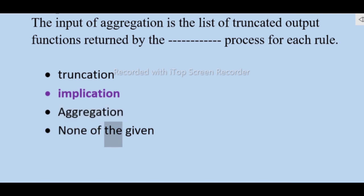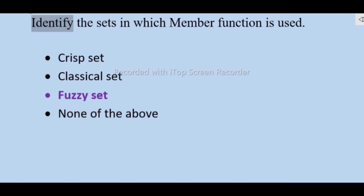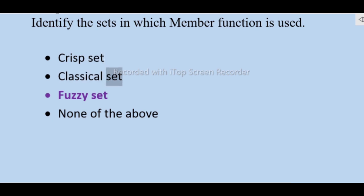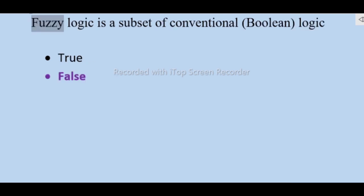Identify the sets in which membership function is used: fuzzy set — not crisp set, classical set, none of the above. Fuzzy logic is a subset of conventional Boolean logic — true or false — false.